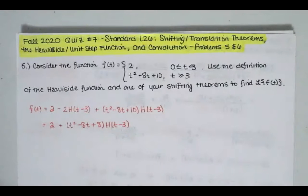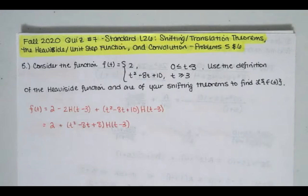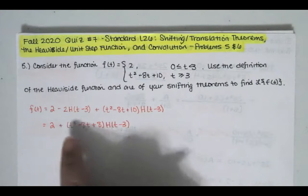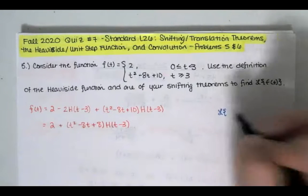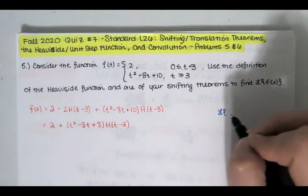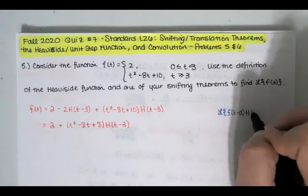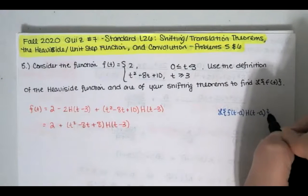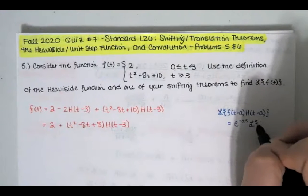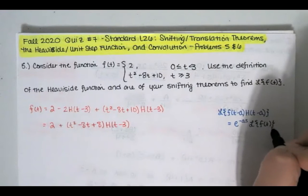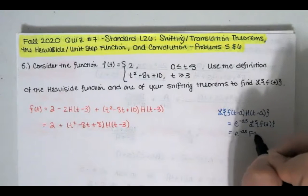Now we've got this sum of two functions. One of the functions features the Heaviside function. In order to compute the Laplace transform of this, we want to use one of the translation theorems. We had two versions: f of t minus a times h of t minus a equals e to the negative a·s times the Laplace transform of f of t, denoted F of s.